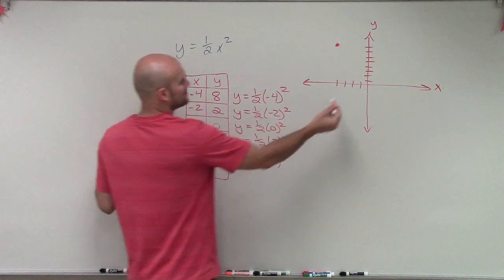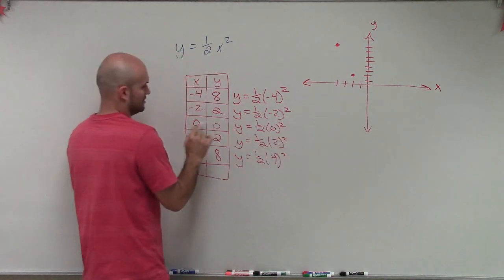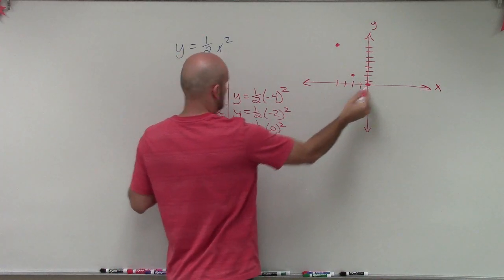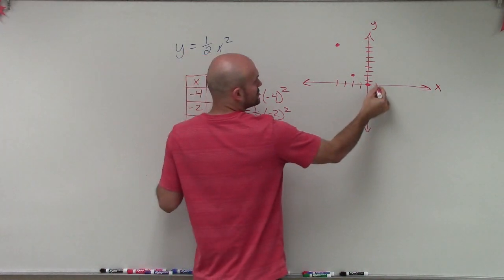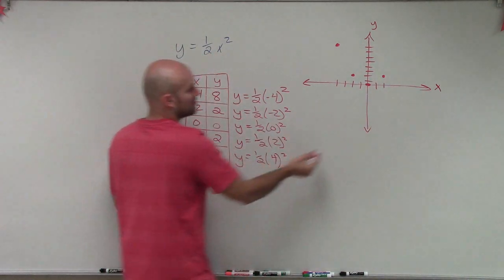Now let's plot negative 2, positive 2. Negative 2, up 2. 0, 0. Positive 2, positive 2. So over 2, up 2.